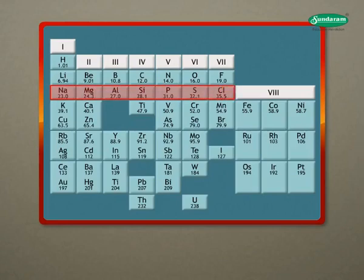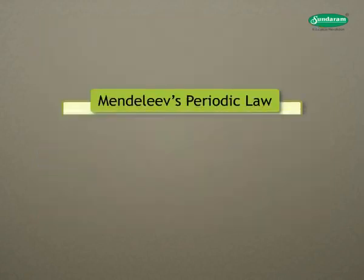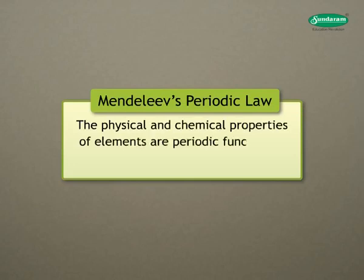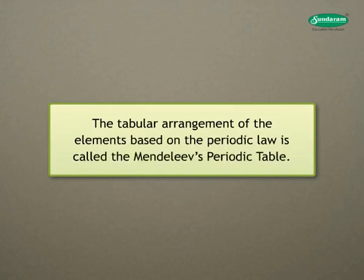Proceeding in this manner, he could arrange all known elements according to their properties and thus created the first periodic table containing 63 elements. Mendeleev's periodic law states that the physical and chemical properties of elements are a periodic function of their atomic masses. The tabular arrangement of the elements based on the periodic law is called Mendeleev's periodic table. Let us look at the main features of Mendeleev's periodic table.